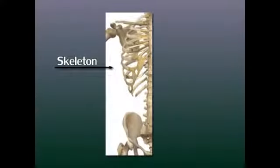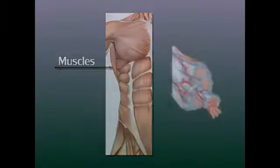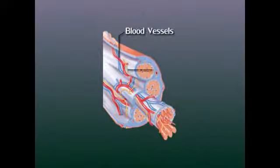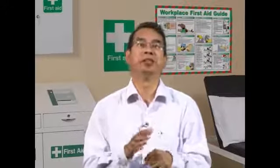Musculoskeletal problems. The skeleton is a hard framework around which the body is constructed and supports the muscles, blood vessels and nerves, and protects organs such as the brain and the heart. It is also joined in many places, and muscles attached to the bones enable them to move. Most of these movements are controlled at will and coordinated by impulses sent from the brain via the nerves to every muscle and joint in the body.